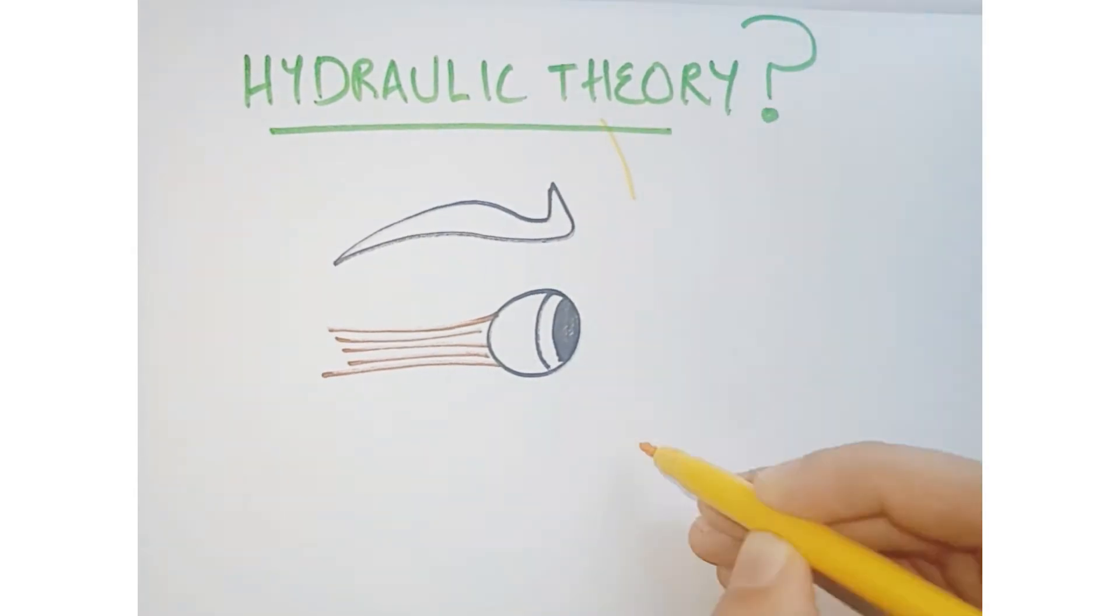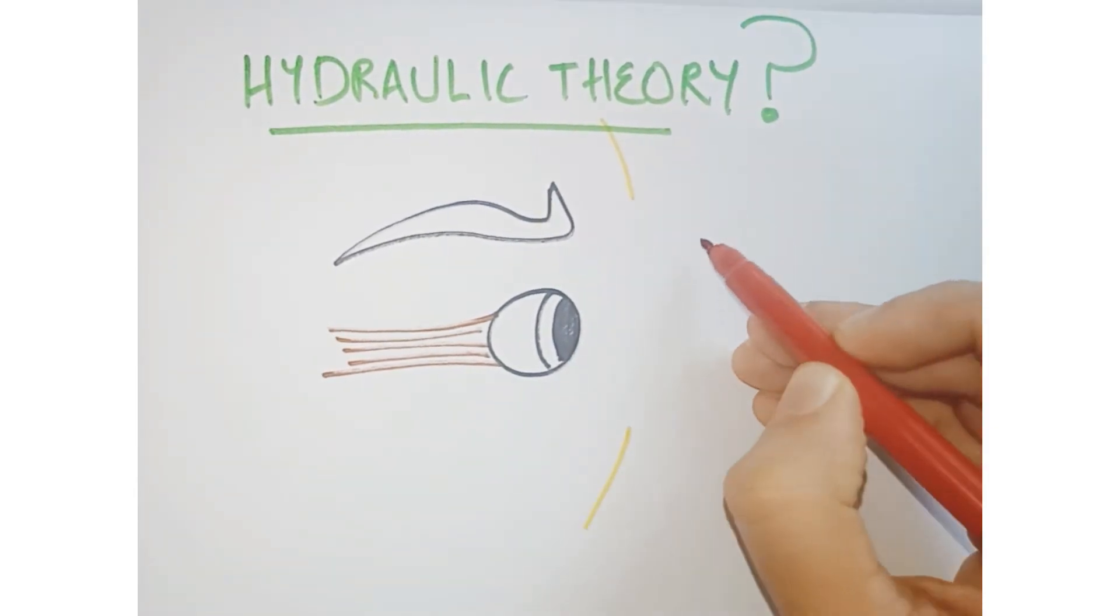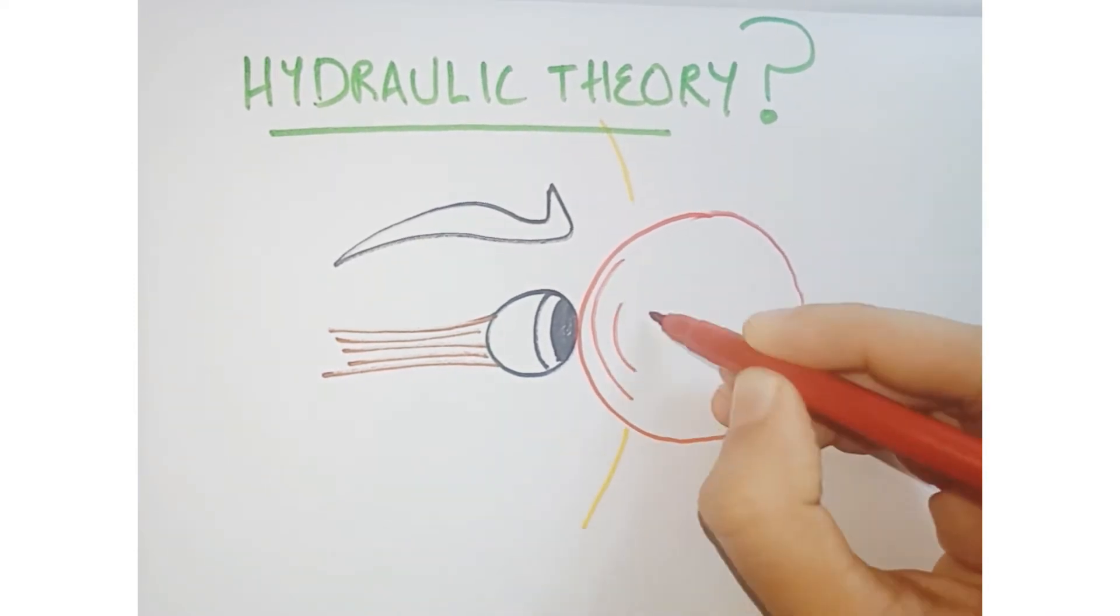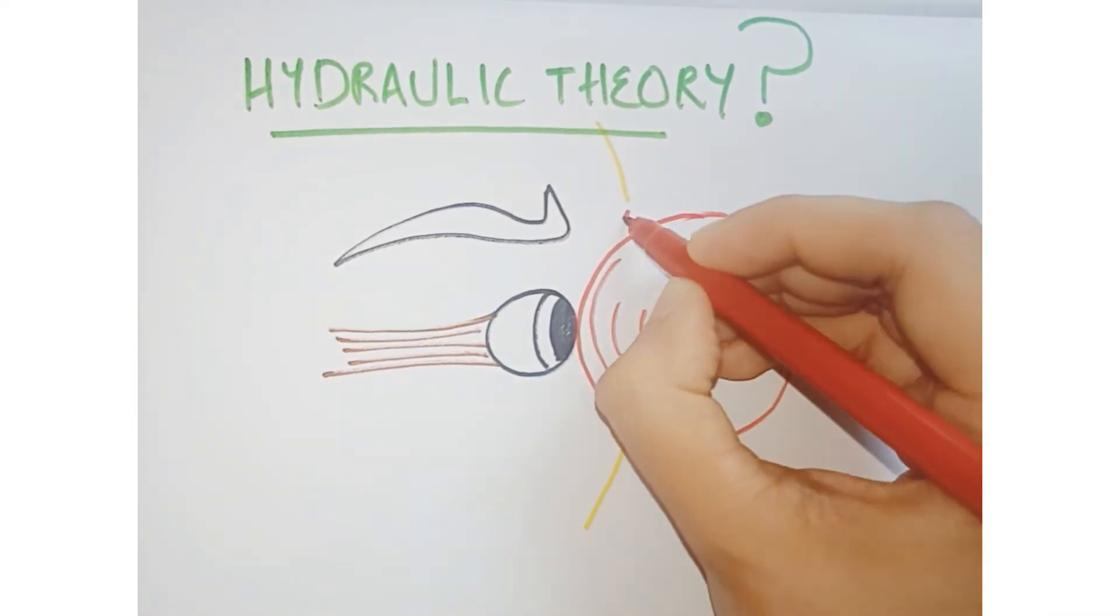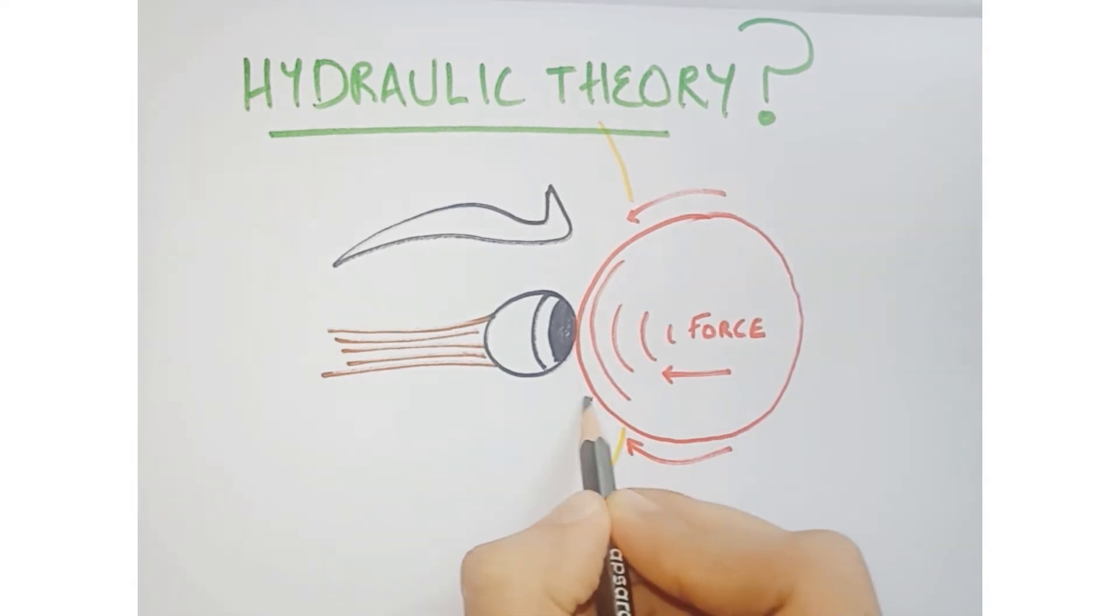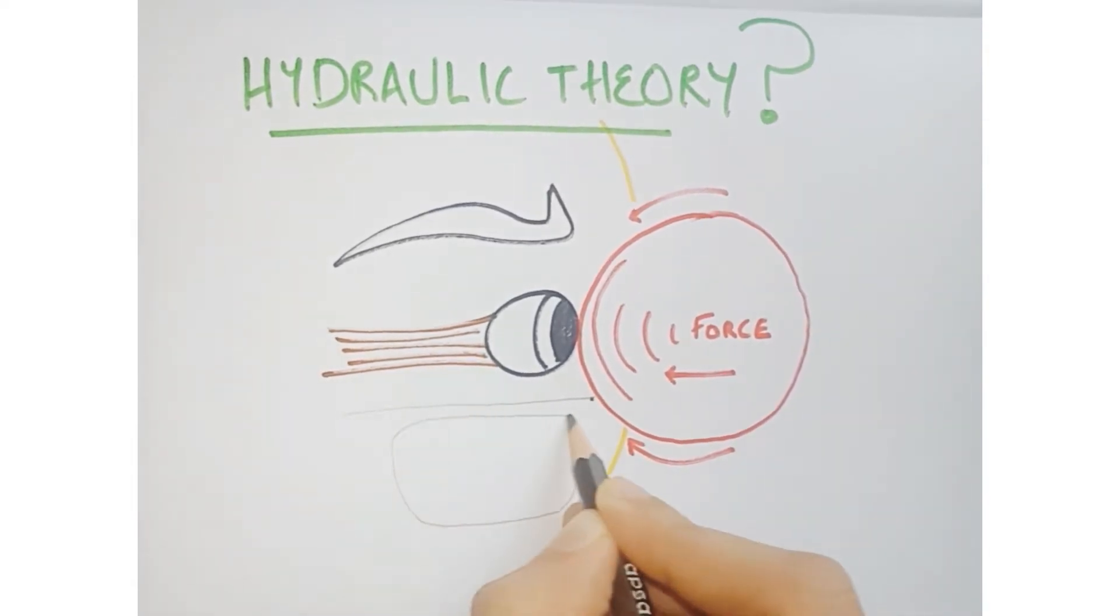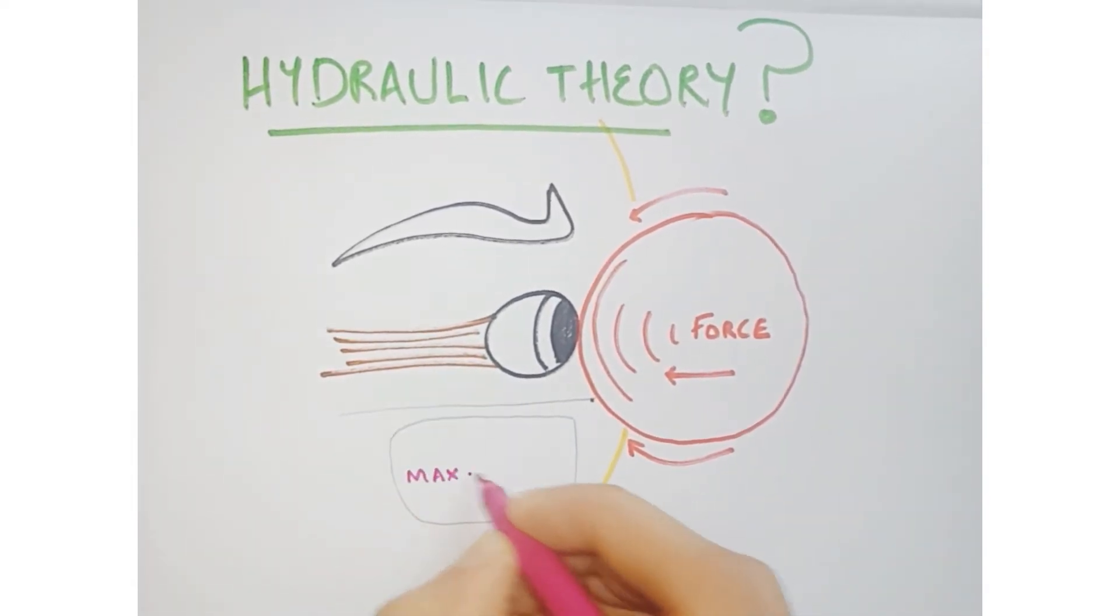This theory states that when an object of diameter greater than the orbital rim, suppose a cricket ball, strikes the eye - this is your orbital wall and below that your maxillary sinus - due to this trauma,